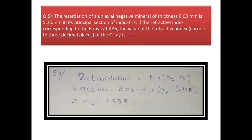Next question: the retardation of a uniaxial negative mineral of thickness 0.03 mm is 5160 nm in its principal section. If the refractive index of the E-ray is 1.486, find the refractive index of the O-ray. Using the formula: retardation = thickness × birefringence. Birefringence = difference in refractive indices of E-ray and O-ray. Putting all values into the formula, the refractive index of the O-ray (nω) comes out to be 1.658.